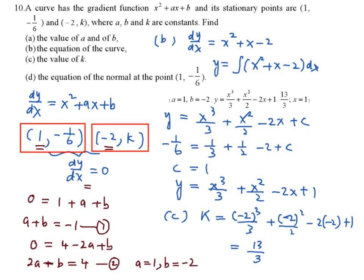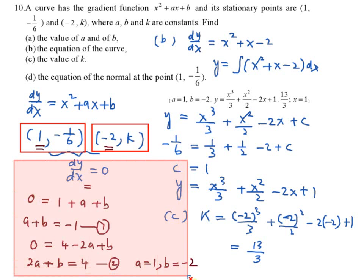For the last part, you have to find the equation of the normal at the point (1, -1/6). This is a little bit tricky, because this point is actually your stationary point, meaning it's your maximum or minimum point.